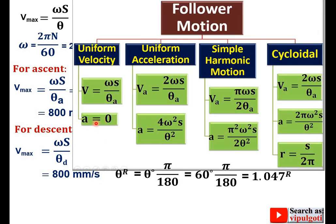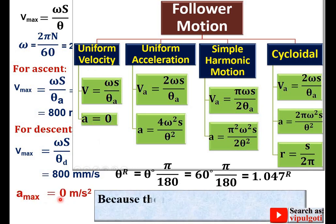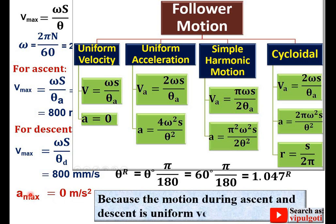For maximum acceleration: since the motion during ascent and descent is uniform velocity, the maximum acceleration of the follower is 0 m/s².